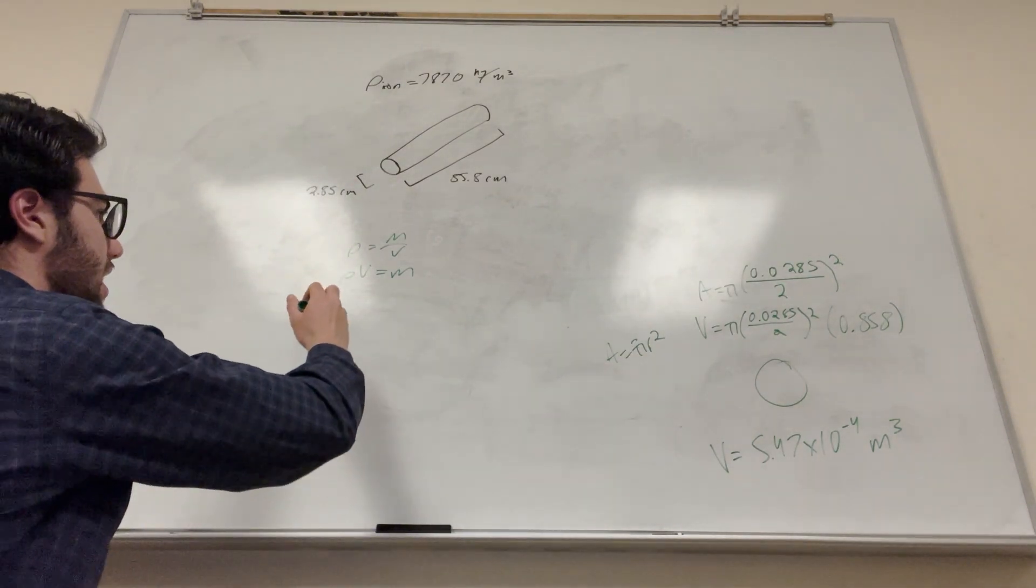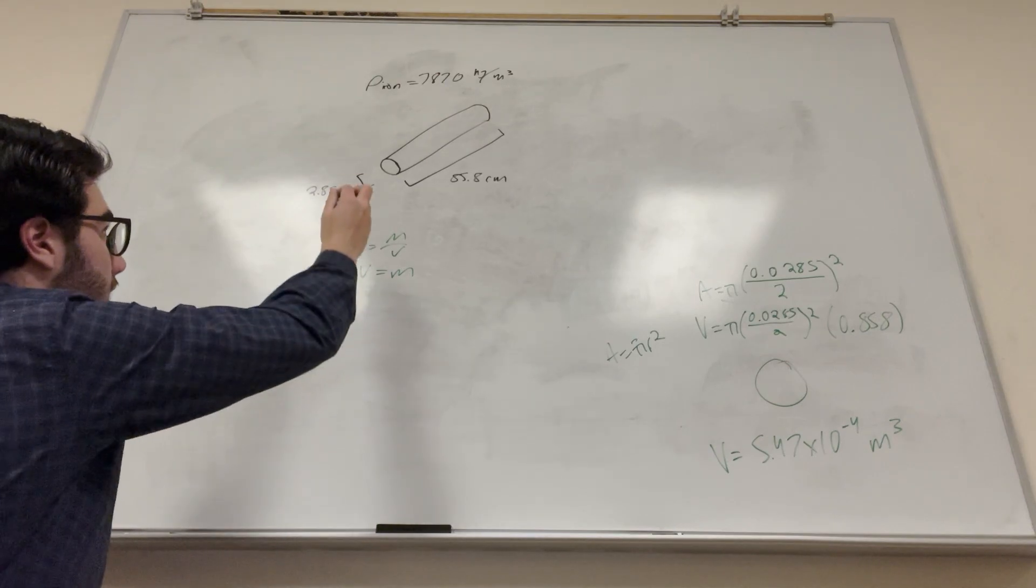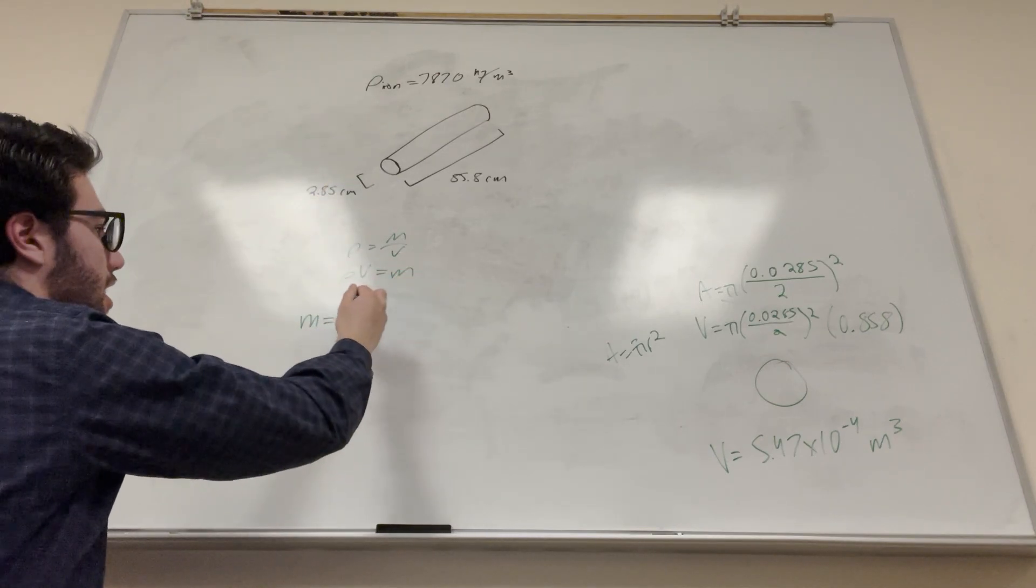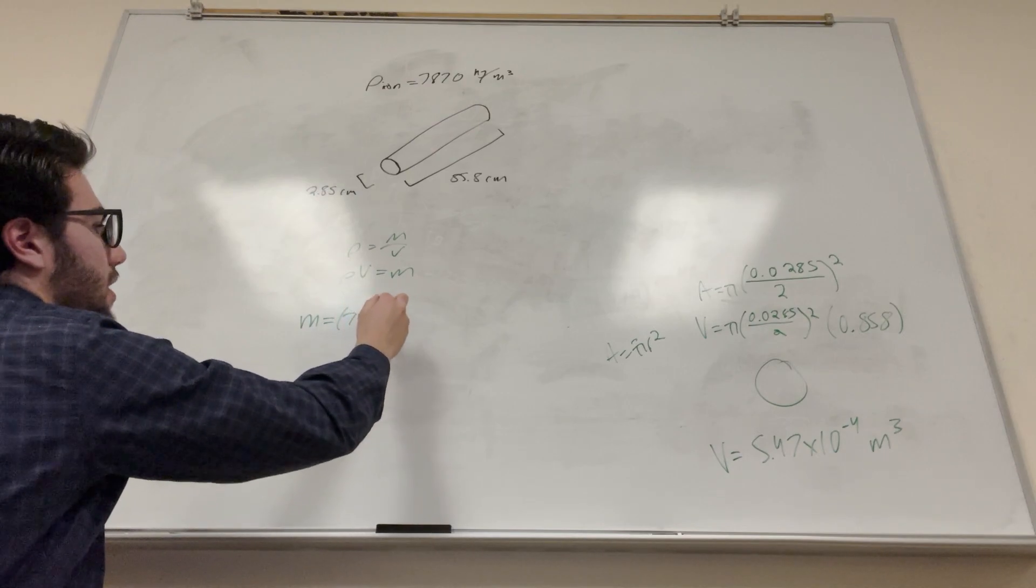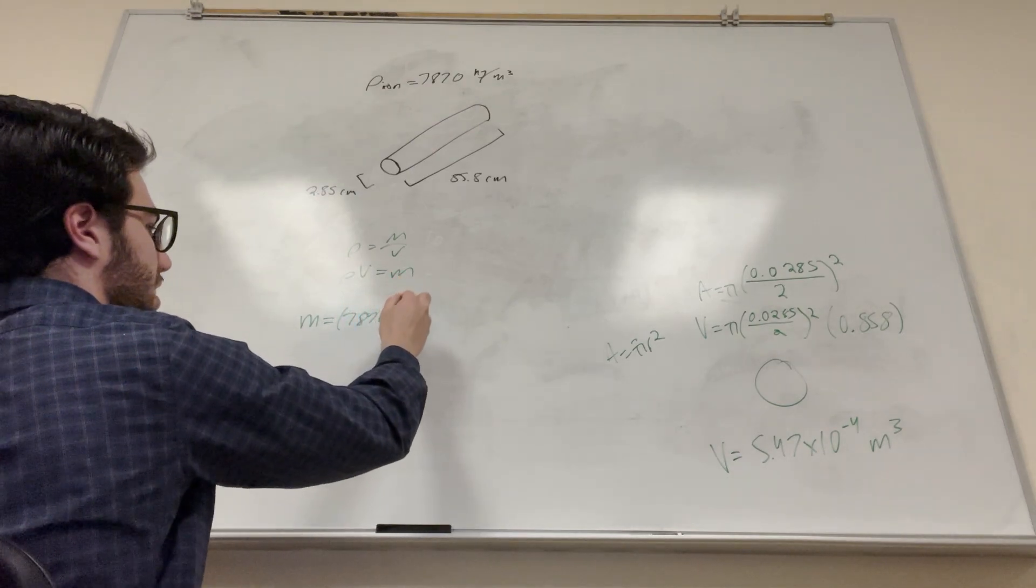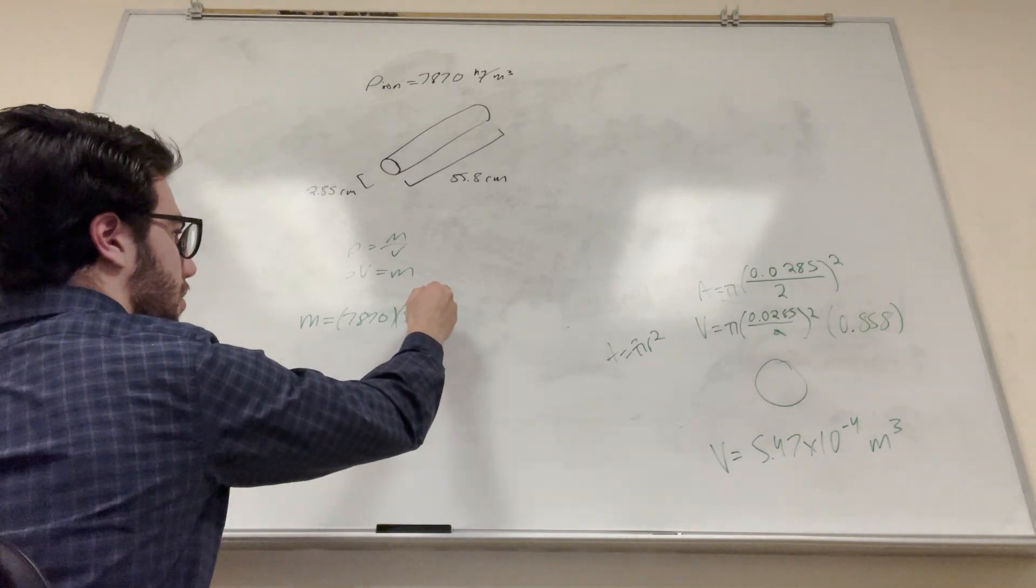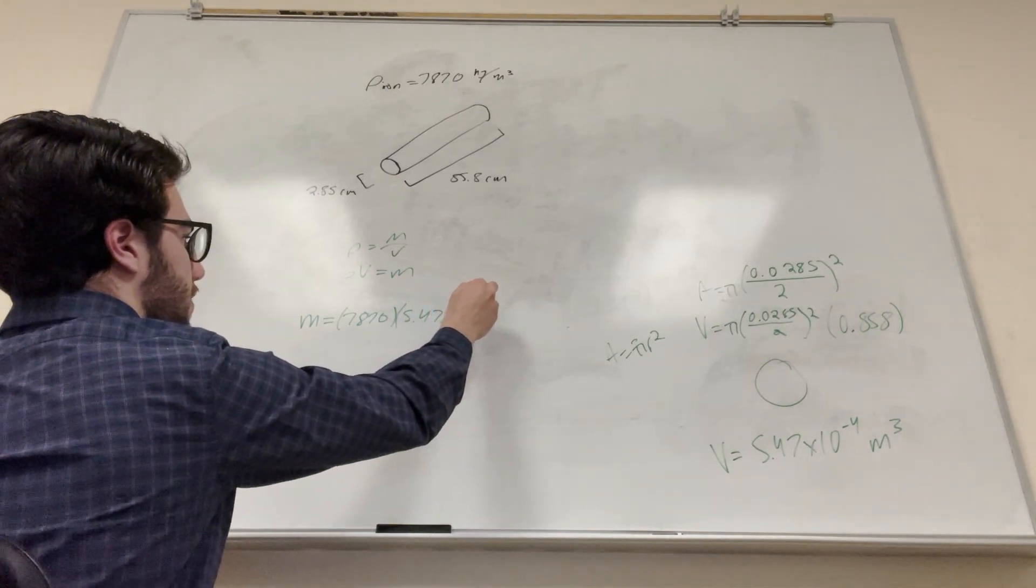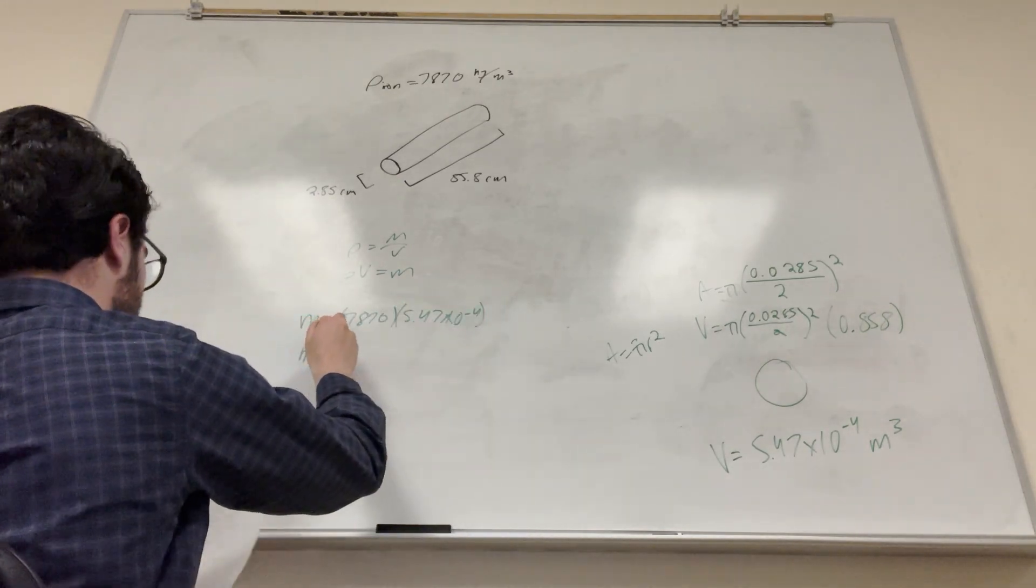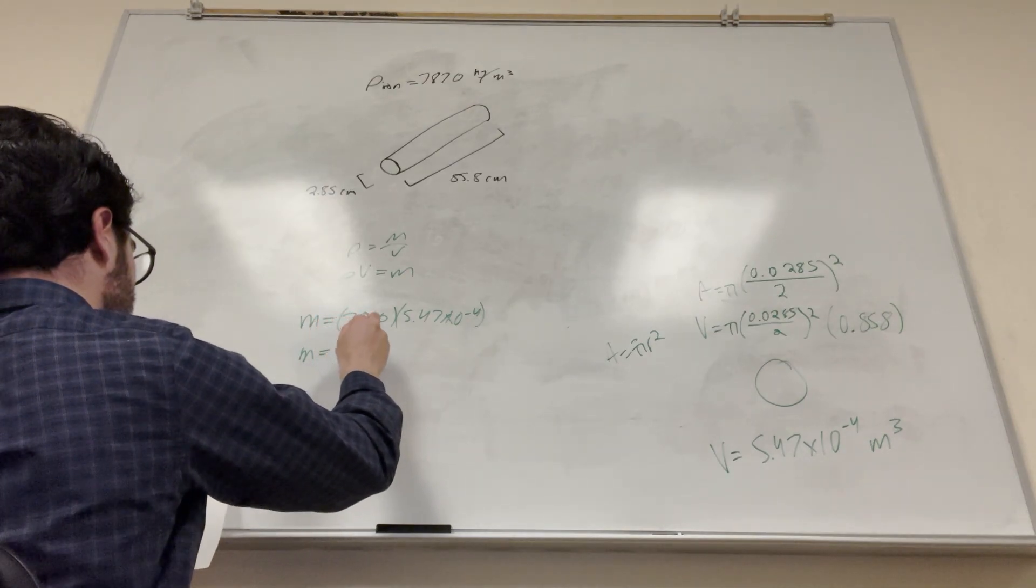But anyway, we can just go ahead and calculate this, so mass is the density that's up there. You just need to find that in your book, 7870. I found it on Google, so it might be a little different than your book. 5.47 times 10 to the negative 4. You multiply this, you're gonna get 4.31 kilograms.